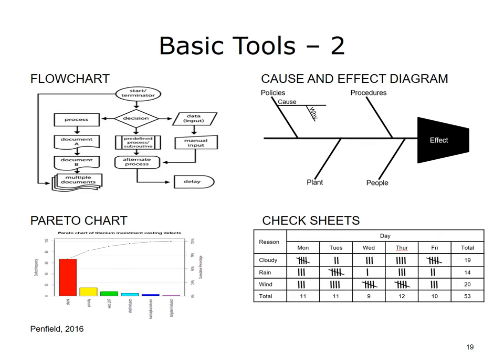Cause and effect analysis is sometimes referred to as the Ishikawa or Fishbone Diagram. In a Cause and Effect Diagram, the problem — the effect — is stated in a box on the right side of the chart, and likely causes are listed around major headings, or bones, that lead to the effect. Cause and Effect Diagrams can assist in organizing the contributing causes to a complex problem. TOG, 2004.